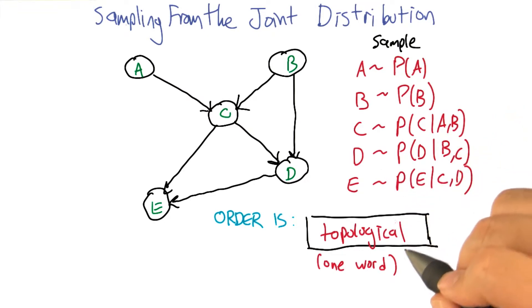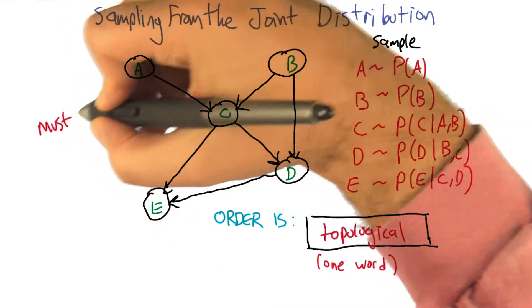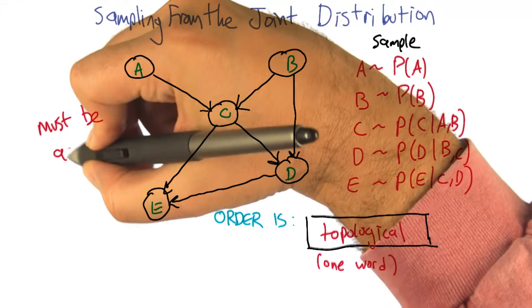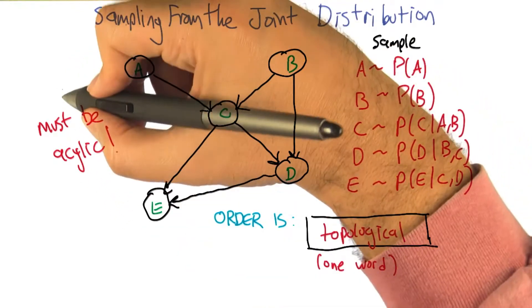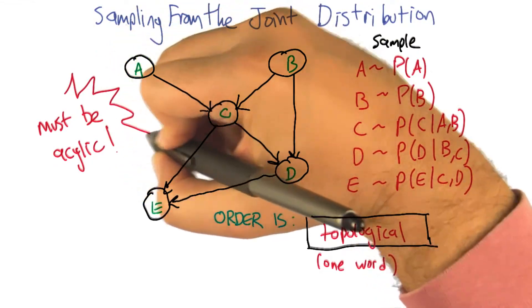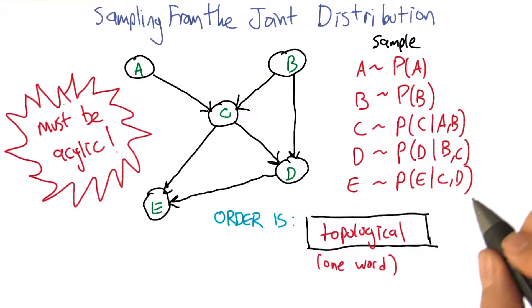It does depend on a particular property though. Let's see, topological only makes sense if you really can go from no parents to parents. So, it cannot be cyclical. You can't have arrows that take you back. So, E can't be a parent of A and also have A be one of its parents. That's right. So it must be acyclic. Must be acyclic, right.